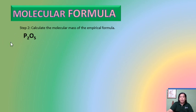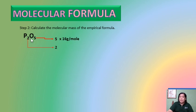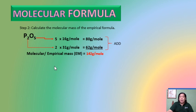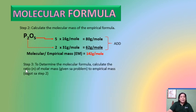For step 2, calculate the molecular mass of the empirical formula P2O5. Identify the number of atoms: phosphorus has 2 atoms, oxygen has 5 atoms. Multiply each by the atomic mass: oxygen is 5 × 16 = 80 g/mol, and phosphorus is 2 × 31 = 62 g/mol. Add the two values: 80 + 62 = 142 g/mol. This is the empirical mass.